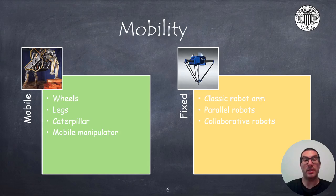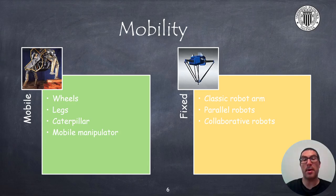On the other hand, some robots have a fixed link attached to the ground, the ceiling, or any other structure. This is the case of classic robot arms, parallel robots, and collaborative robots.